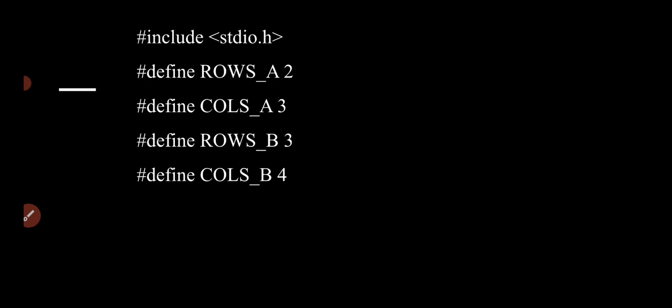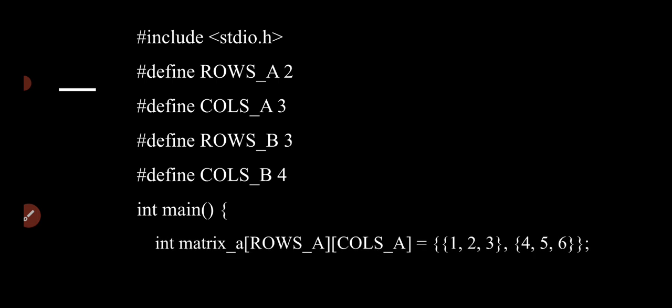The answer matrix will be of size 2 by 4. We define the number of rows and columns — we could also get these using scanf and printf, but here we are defining values as constants. The program starts with integer main and the opening brace. Next, we are declaring the matrices. We know that a matrix is essentially a 2D array.